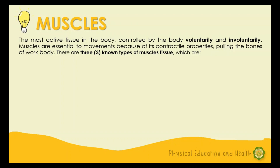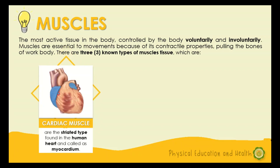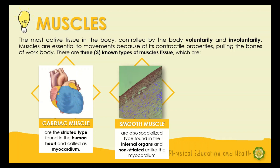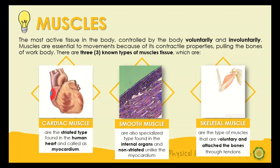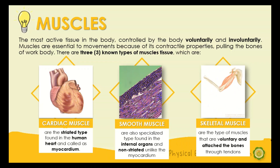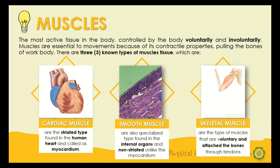There are three known types of muscle tissues: cardiac muscle, smooth muscle, and skeletal muscle. Cardiac muscle is the striated type found in the human heart, called the myocardium, and it is an involuntary muscle. Smooth muscle is also a specialized type found in internal organs and is non-striated unlike the myocardium — it is also involuntary. Skeletal muscle is voluntary and attaches to bones through tendons, and is responsible for strength. Muscle types are made up of muscle cells, also known as fibers, bundled together. These bundles receive signals from the nervous system to contract and create force, movement, or muscle contraction.